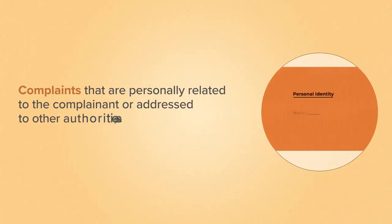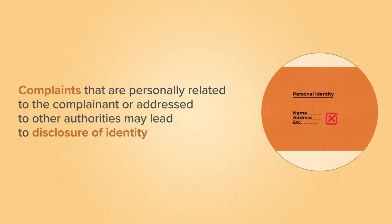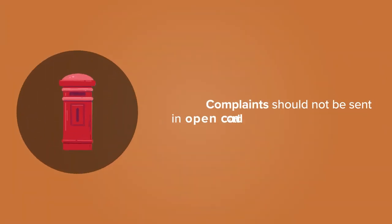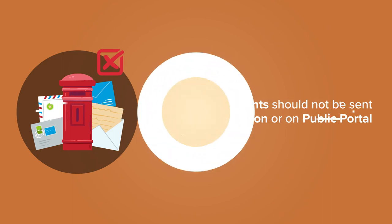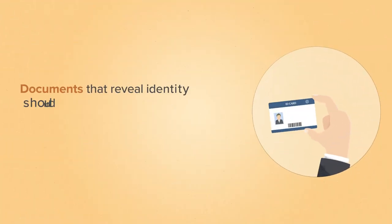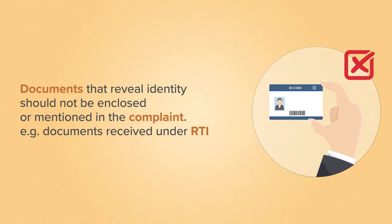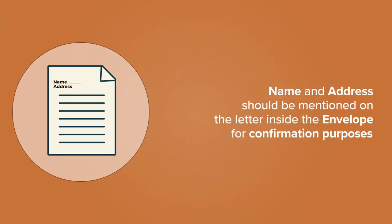Complaints that are personally related to the complainant or addressed to other authorities may lead to disclosure of identity. Complaints should not be sent in open condition or on a public portal. Documents that reveal identity should not be enclosed or mentioned in the complaint — for example, documents received under RTI. Name and address should be mentioned on the letter inside the envelope for confirmation purposes.